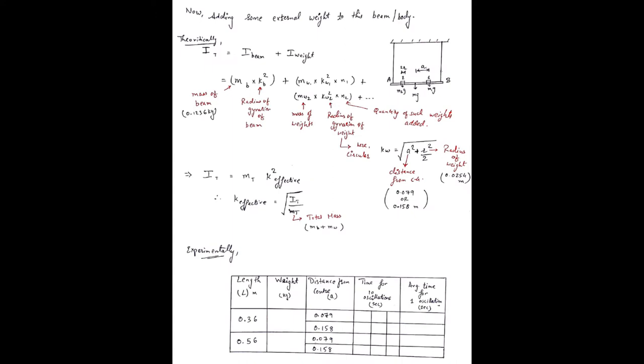Now suppose we add some weight to this beam and check the value of time period and hence the radius of gyration. Theoretically the equation gets a little modified. The total moment of inertia of the system can be given by inertia of beam plus inertia of weight added. Inertia of beam is given by mk squared. Again for weight mk squared, the value of k will be changing depending upon the weight added.